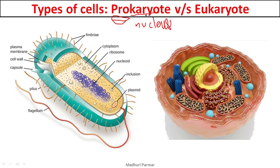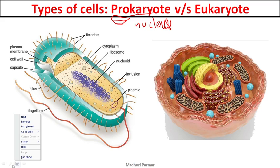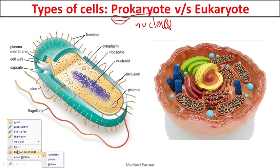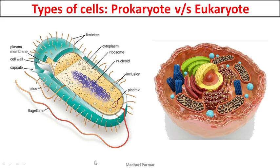Prokaryote means before nucleus was properly formed. What you see here is a bacterium. There are two types of prokaryotes: bacteria and archaea. Monera and archaea — you would have heard of these in five kingdom classification. A prokaryotic cell does not have a nucleus.